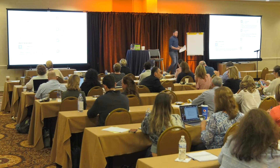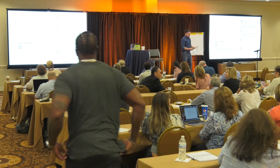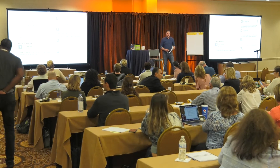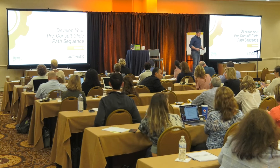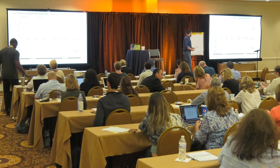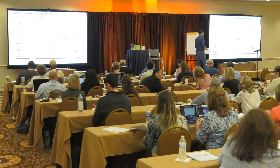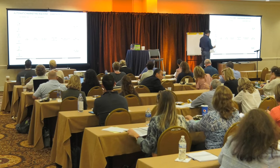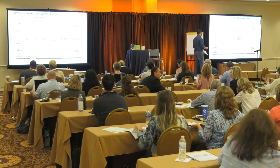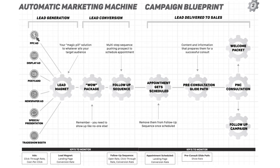We are in the homestretch. We're going to diagram out one more thing. So develop your glide path. What we've done so far: we created a blueprint for the ad that drives traffic to the landing page where they download your lead magnet. Once they've done that, they get this follow-up sequence of emails that we just blueprinted out. And it's driving them to schedule an appointment, schedule a consult.